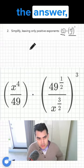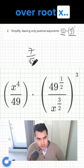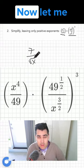First of all, the answer is 7 over root x. This is the answer. Now let me show you why.